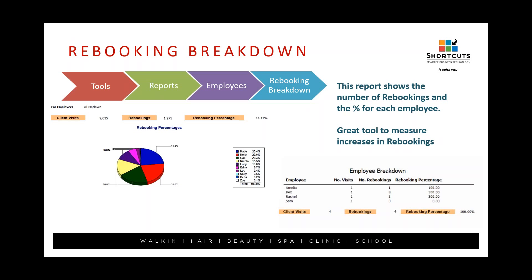In Shortcuts, under your tools in the report category, you'll find the rebooking breakdown report — this is specific to employees and shows the percentages for each one. When running this report, don't just run it for one or two months; if you've been using Shortcuts for a few years, run it for an entire year. See how employees are performing — are they able to get customers to rebook, and are they reminding them to stick to a schedule, especially for treatments or colors? Look at the big picture to get a really good sense of how employees are performing.